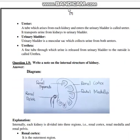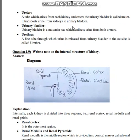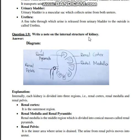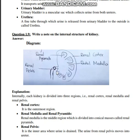The next question is 1.9: write a detailed note on the internal structure of the kidney. As you can see in the diagram, this is the internal structure of a kidney. There is the outer region called the renal cortex, the middle region called the renal medulla, and a small space called the renal pelvis.